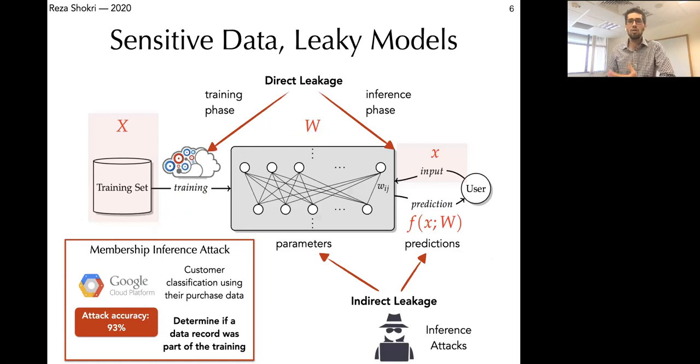The models also leak a ton of information about their training data. If an adversary has access to the model predictions or parameters, which are trained on some sensitive training data, they'd be able to reconstruct a lot of information about individual records in the training set. For example, the adversary can tell whether your data has been part of the training set or not, or reconstruct some sensitive attributes about the data.